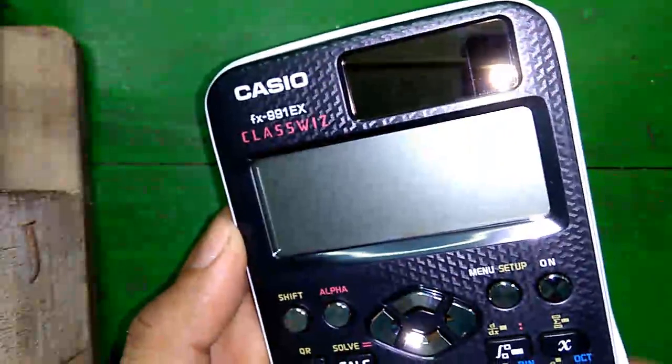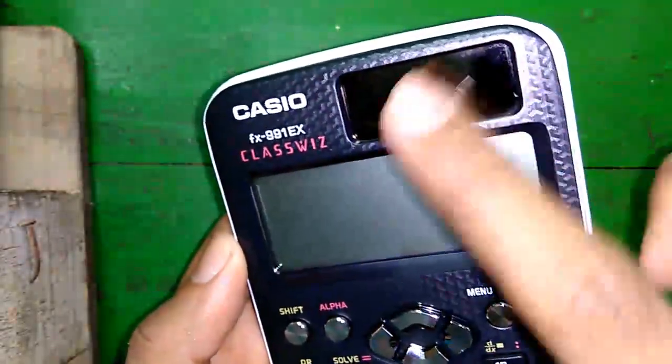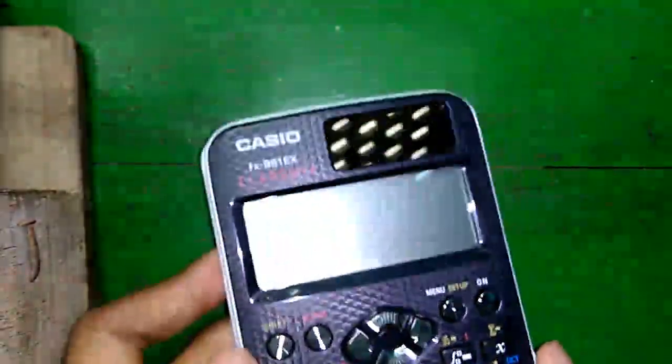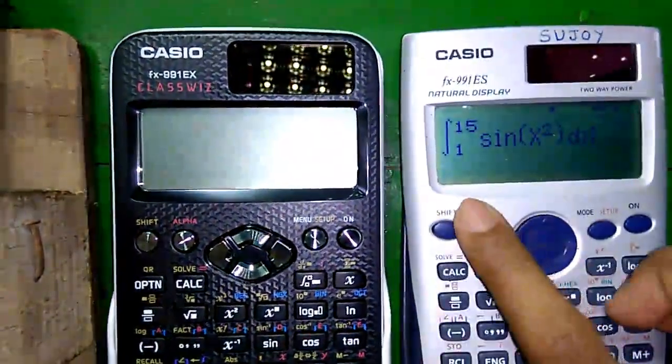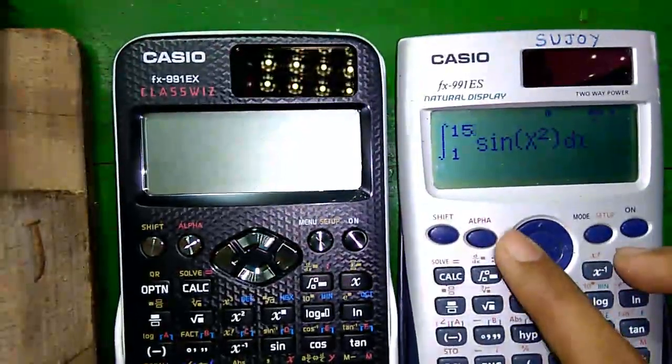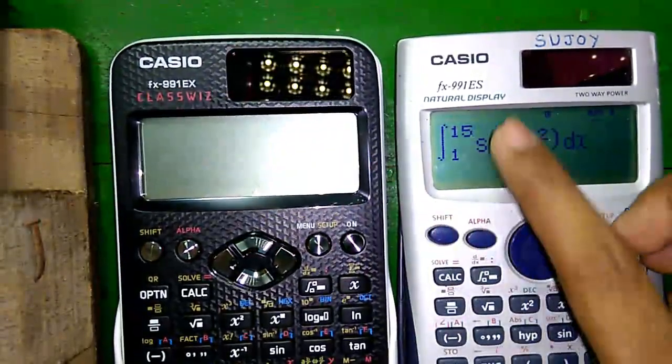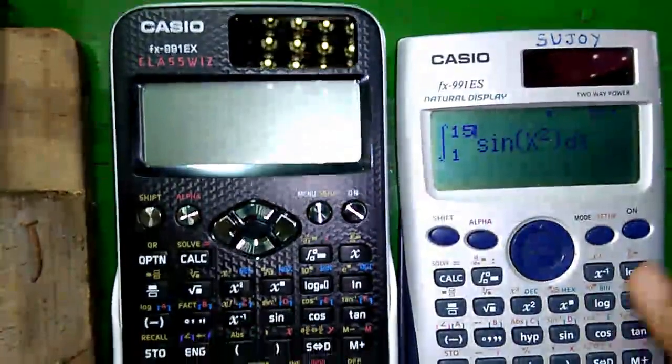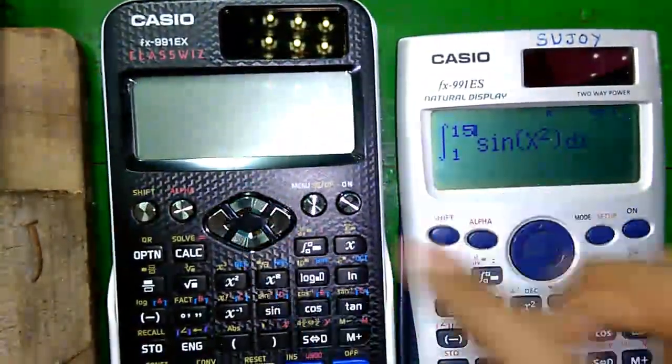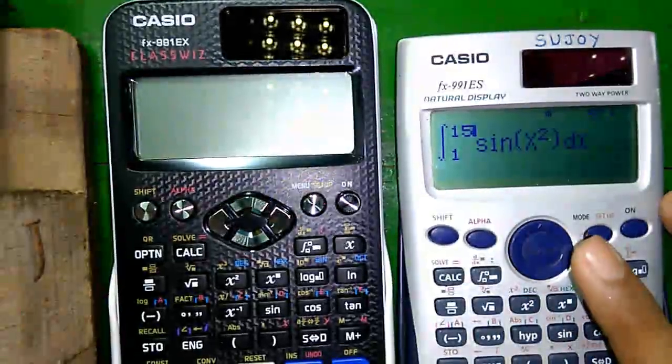Let me show you the calculator from a closer look. So here is the solar panel on the front. Let's compare it with the older model. Display size is almost same, but it has a smaller solar panel. This one has a larger. And this one has metallic buttons. This one has a joystick model.